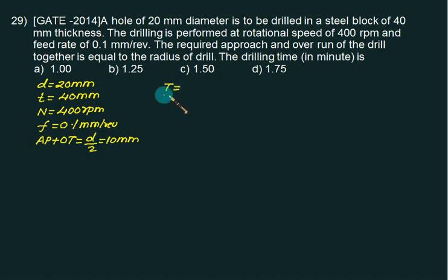Calculate time as T plus approach plus over travel divided by FN. This is 40mm plus 10mm divided by 0.1 feed times 400 RPM, giving 1.25 minutes. Answer exactly matches.